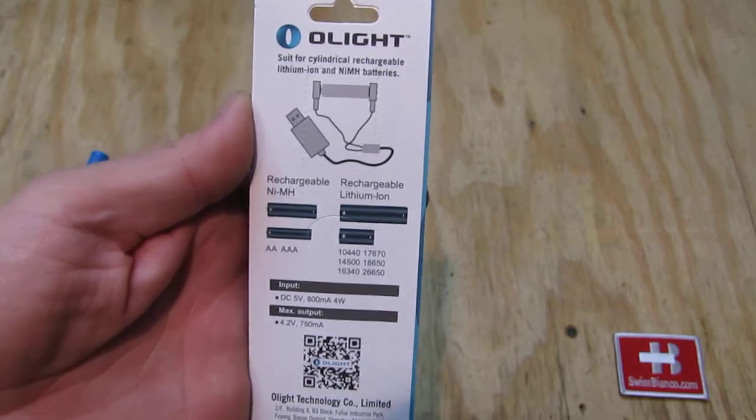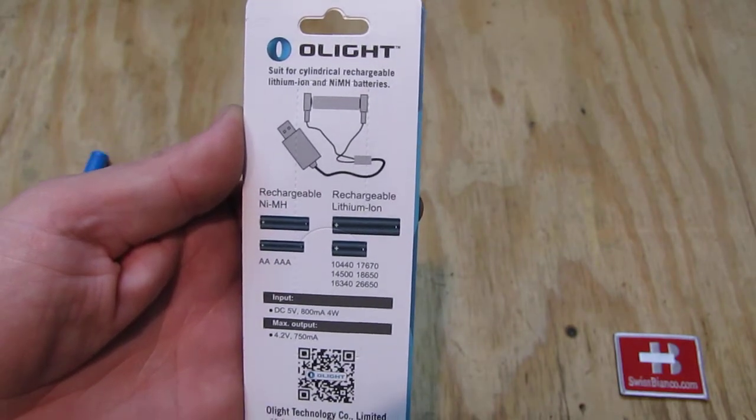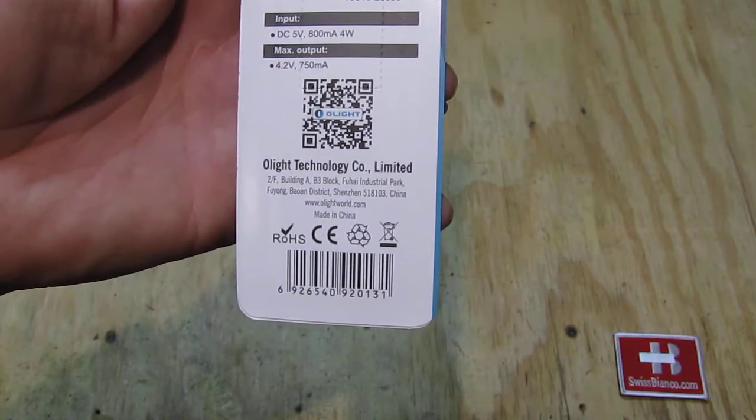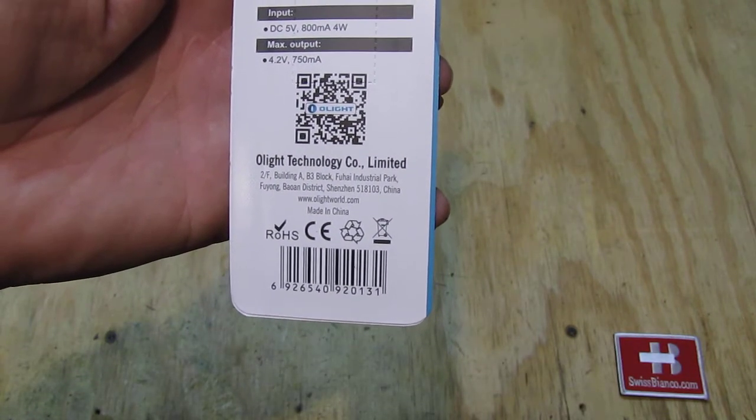On the back side we have some more information on how that works. It's really simple. The website is olightworld.com.